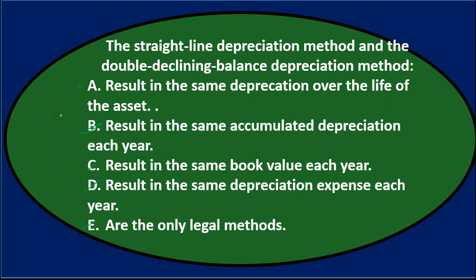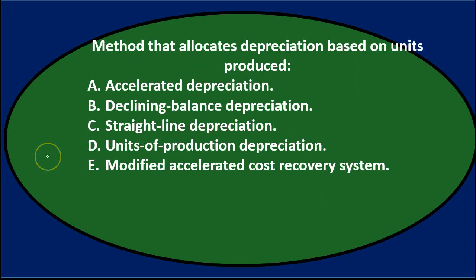So it looks like A is the answer. The straight line depreciation method and the double declining depreciation method result in the same depreciation over the life of the asset — at the end of the life we'll be at the same point.